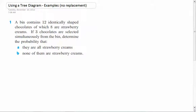We got a bin that contains 12 identically shaped chocolates. What's the point of that? Chocolates are never the same shape. You got like the squares and the diamonds and the little rolled up ones. Man, now I'm hungry. I'm not hungry, I just want some sugar. Identically shaped chocolates of which eight are strawberry creams. If three chocolates are selected simultaneously from the bin, determine the probability that they are all strawberry creams.